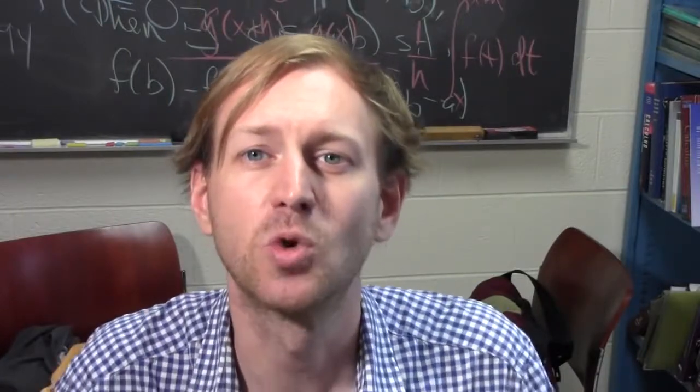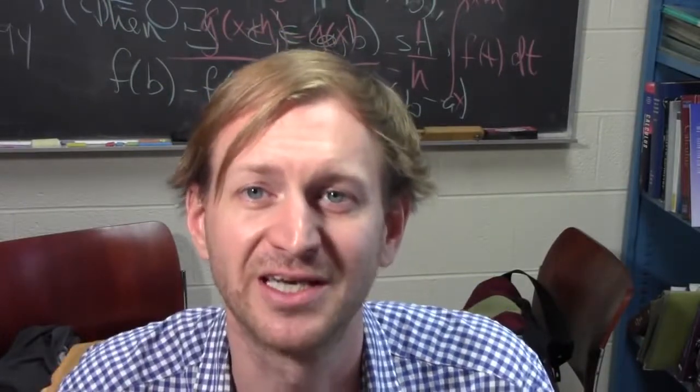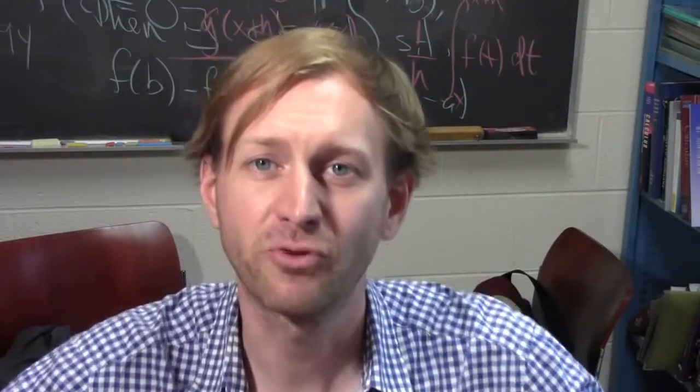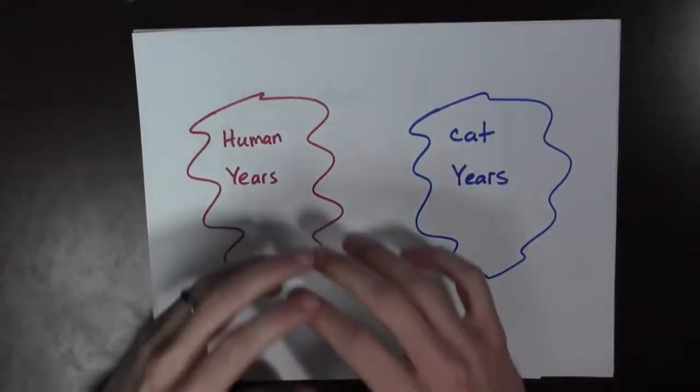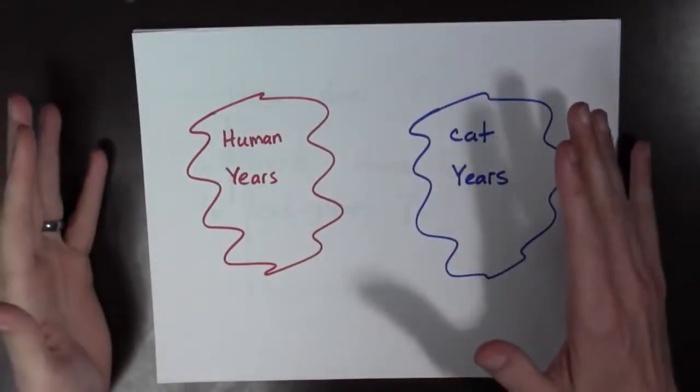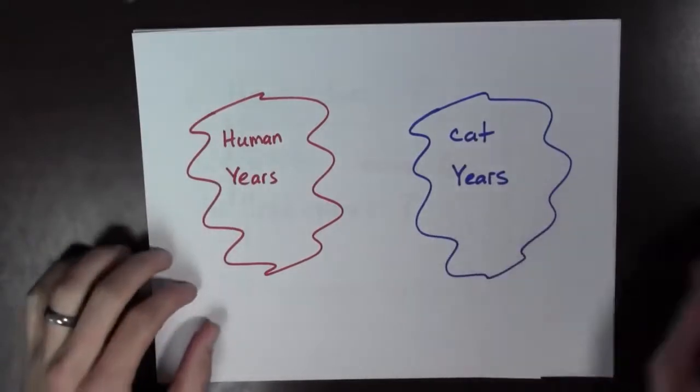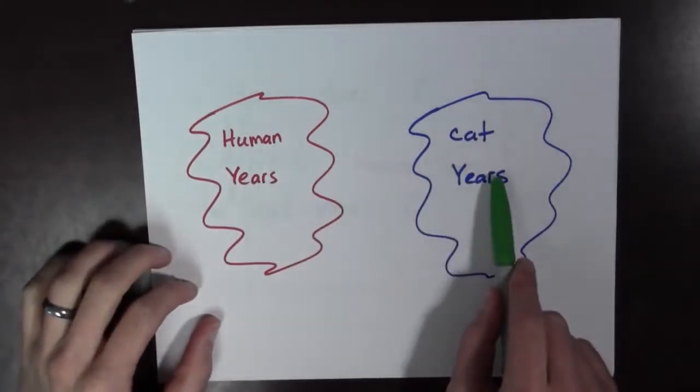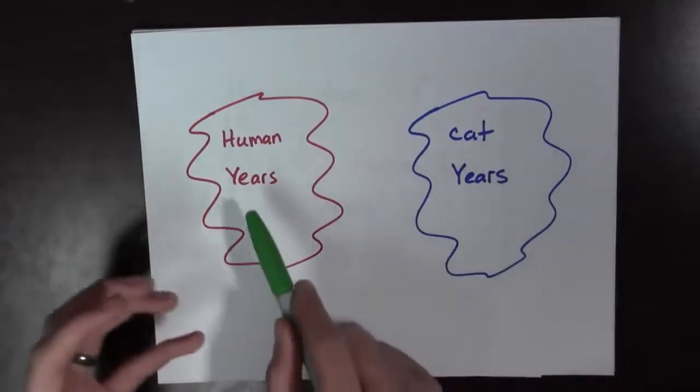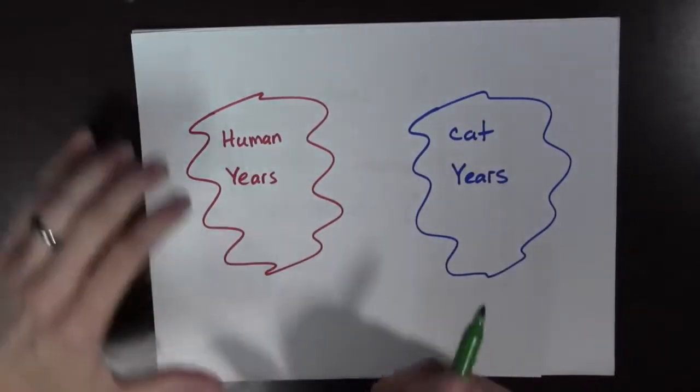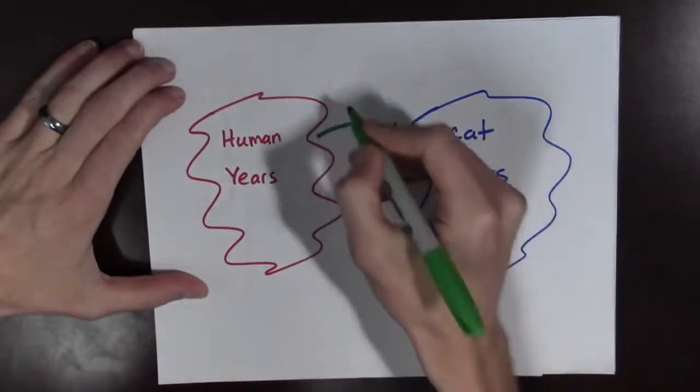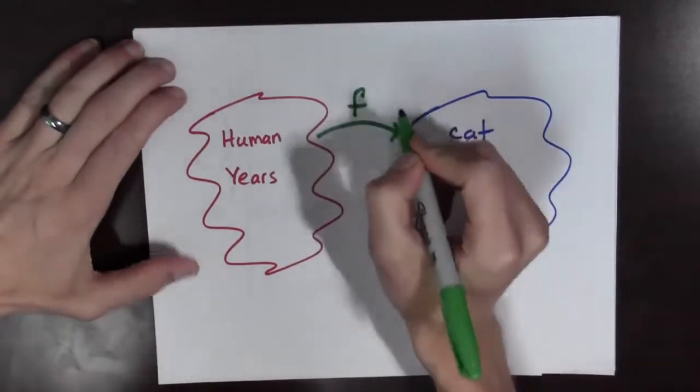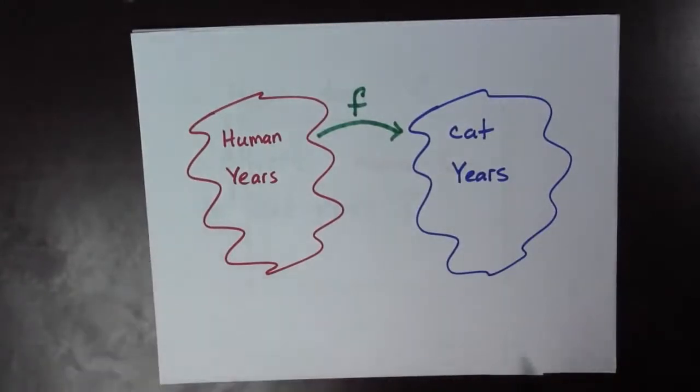To answer this question, we're going to use a function. And I hope that the process of answering this question is going to show us what a function is. So a function is a relationship between two different quantities. In our case, it's human years and cat years. And what we want, we know how many human years Roxy is old, and we want a map that goes to cat years. And we're going to call this f for function. And it's going to be a function, as we're going to see.